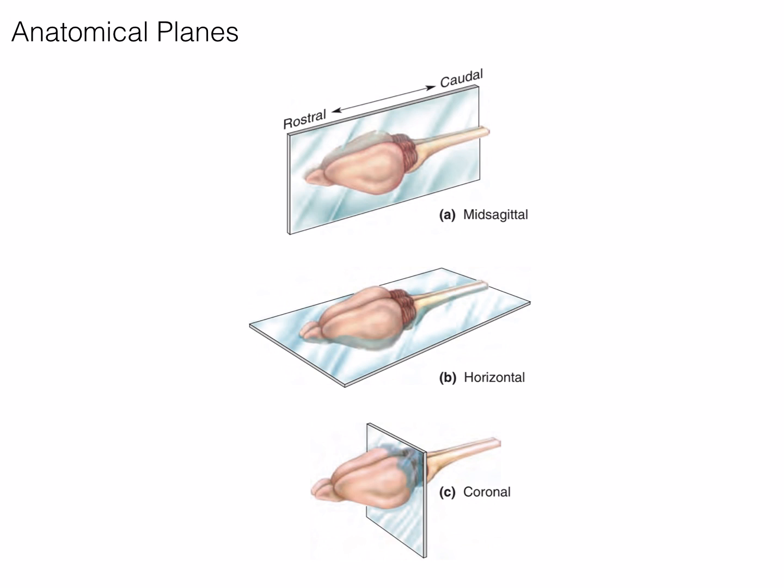Additionally, a sagittal plane is similar to a mid-sagittal plane. However, it bisects the brain into two unequal portions, again from anterior to posterior, and dorsal to ventral.